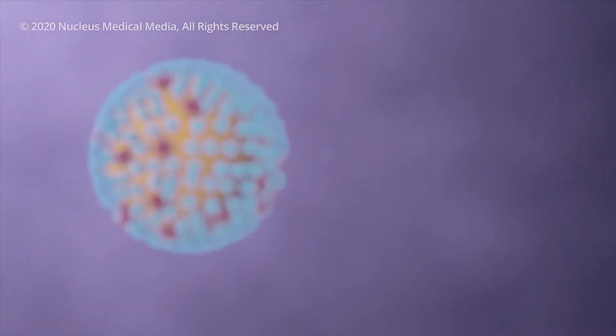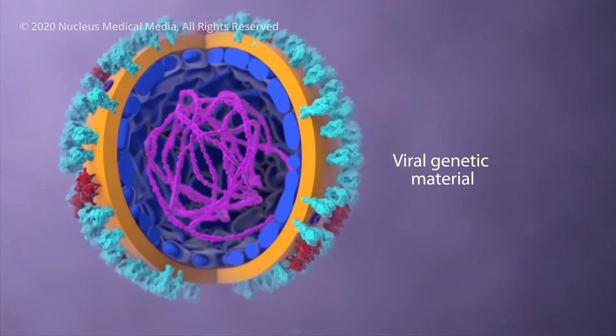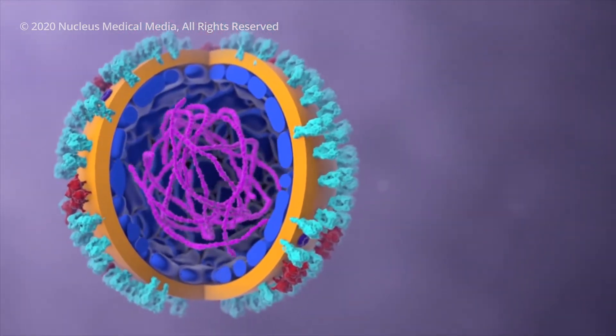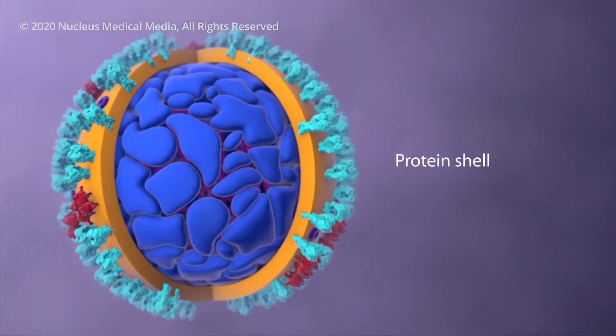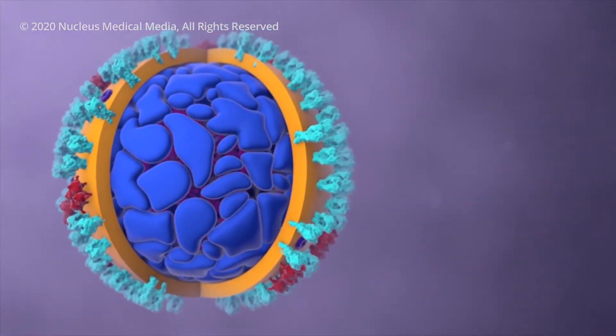Inside the virus, genetic material contains the information to make more copies of itself. A protein shell provides a hard protective enclosure for the genetic material as the virus travels between the people it infects.